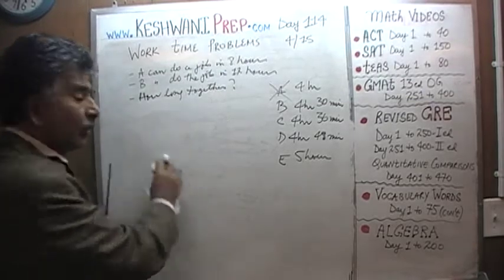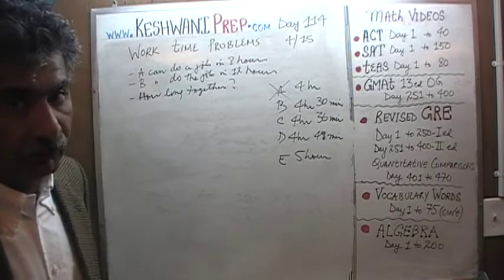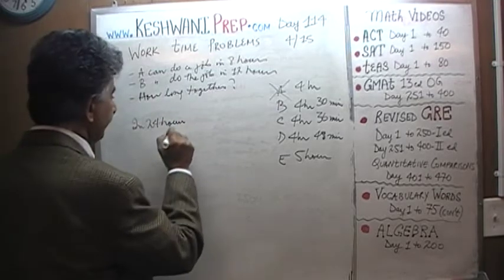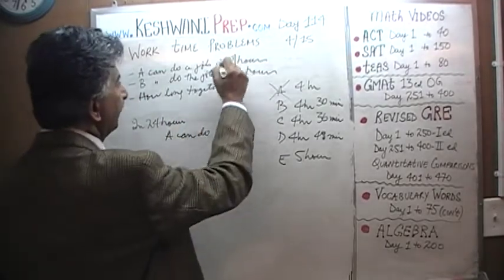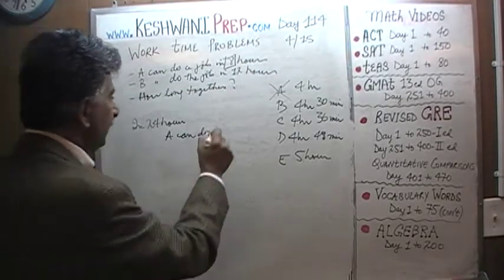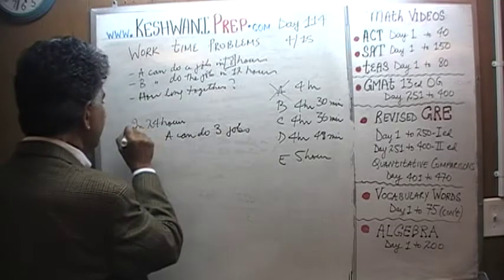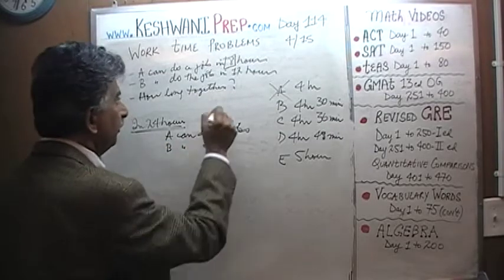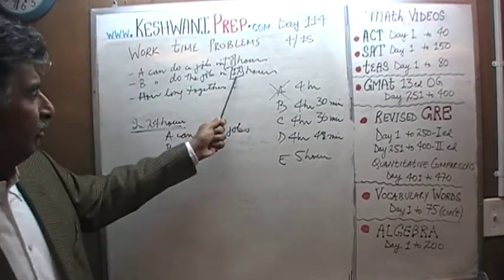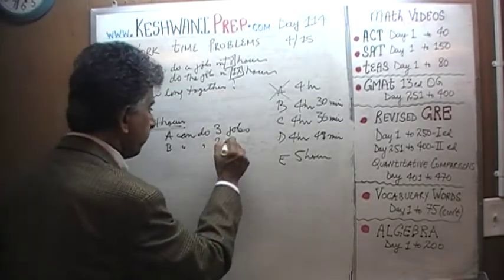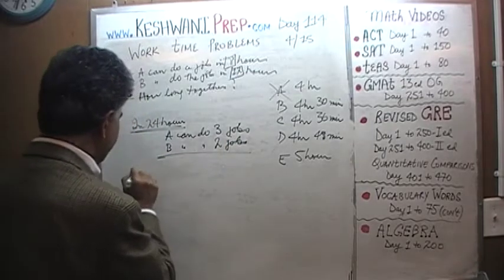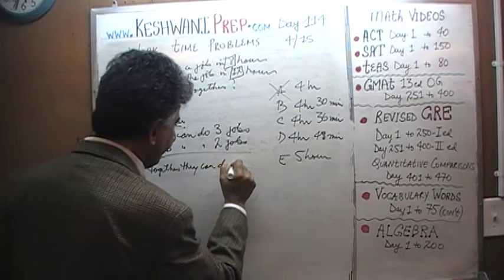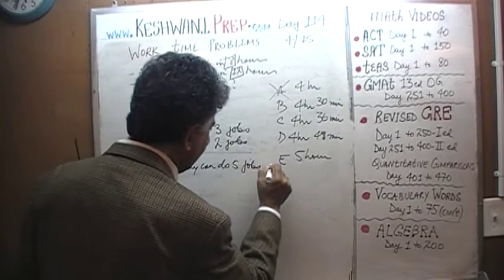We'll ask how much work each can do individually in 24 hours. A takes 8 hours per job, so in 24 hours A can do 3 jobs. B takes 12 hours per job, so in 24 hours B can do 2 jobs. Which means together they can do 5 jobs in 24 hours.